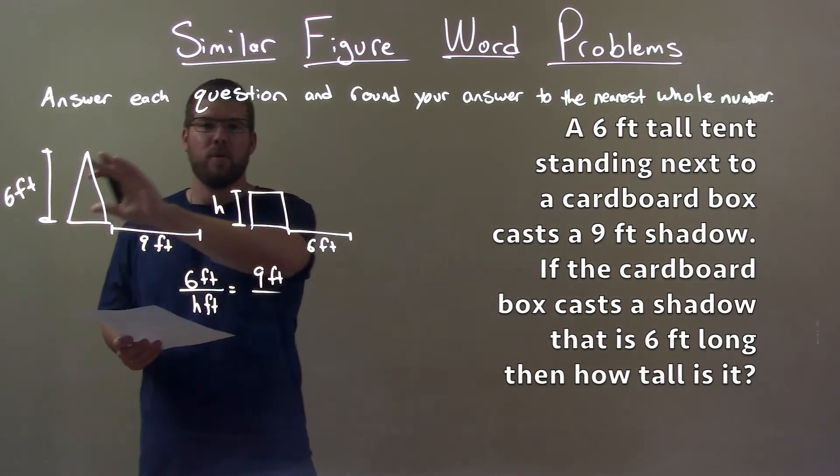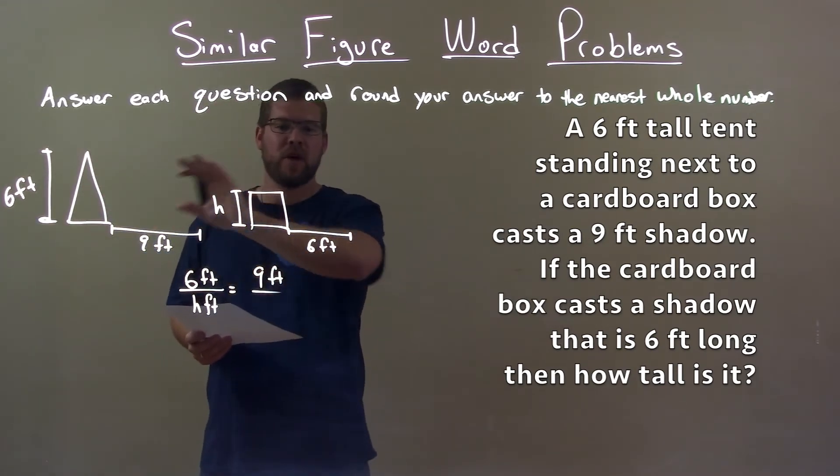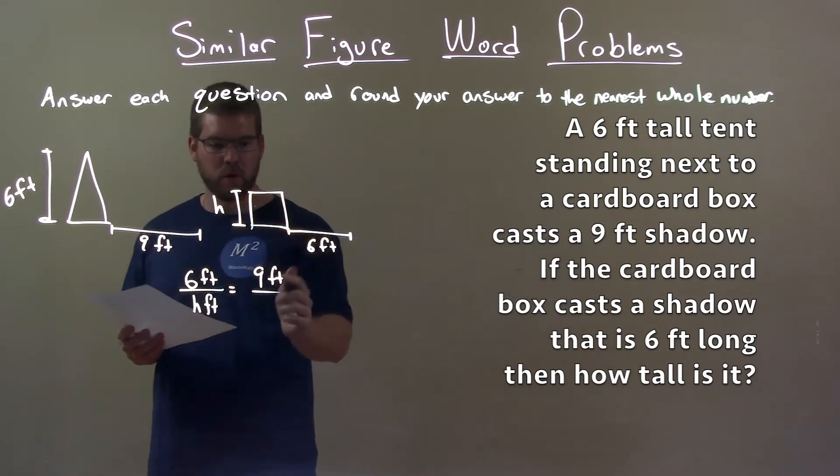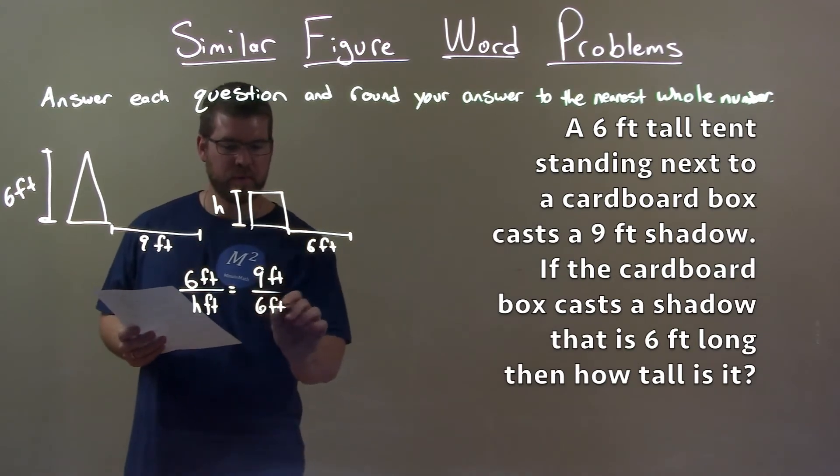These proportions, the measurements of them, the shadow to height ratio should be the same proportion. So nine feet going to six feet.